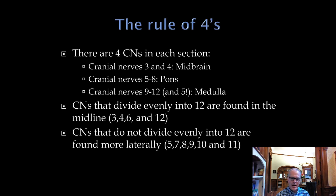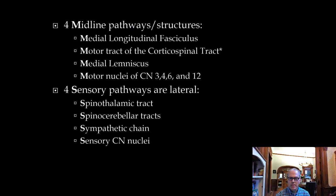Another helpful rule: cranial nerves that divide evenly into twelve are found along the midline — three, four, six, and twelve — whereas the other cranial nerves tend to be found more laterally.